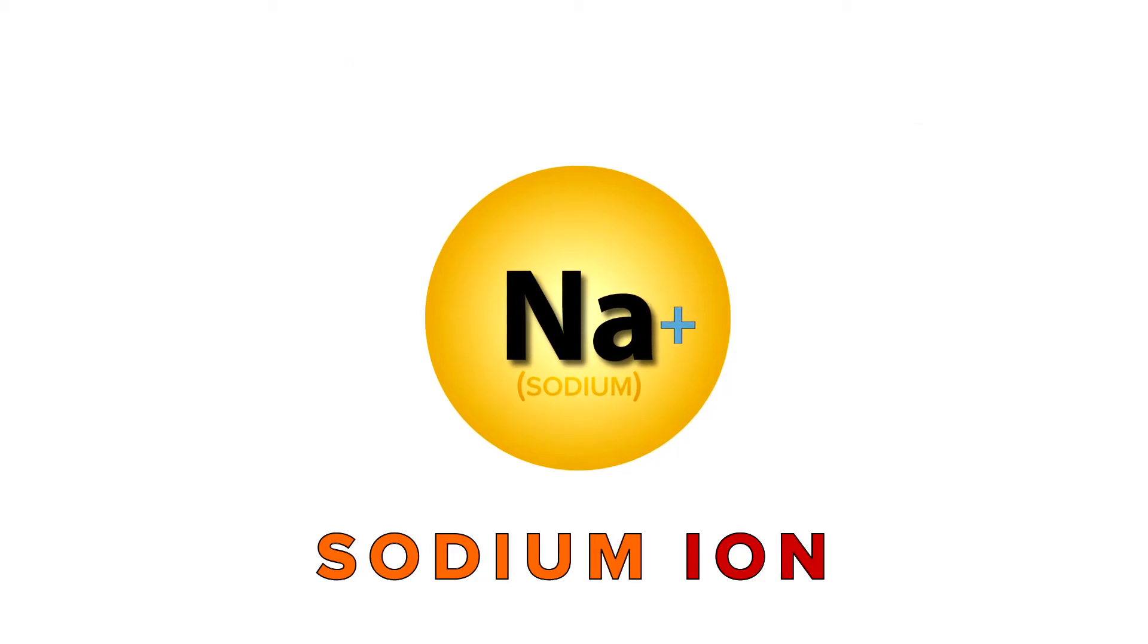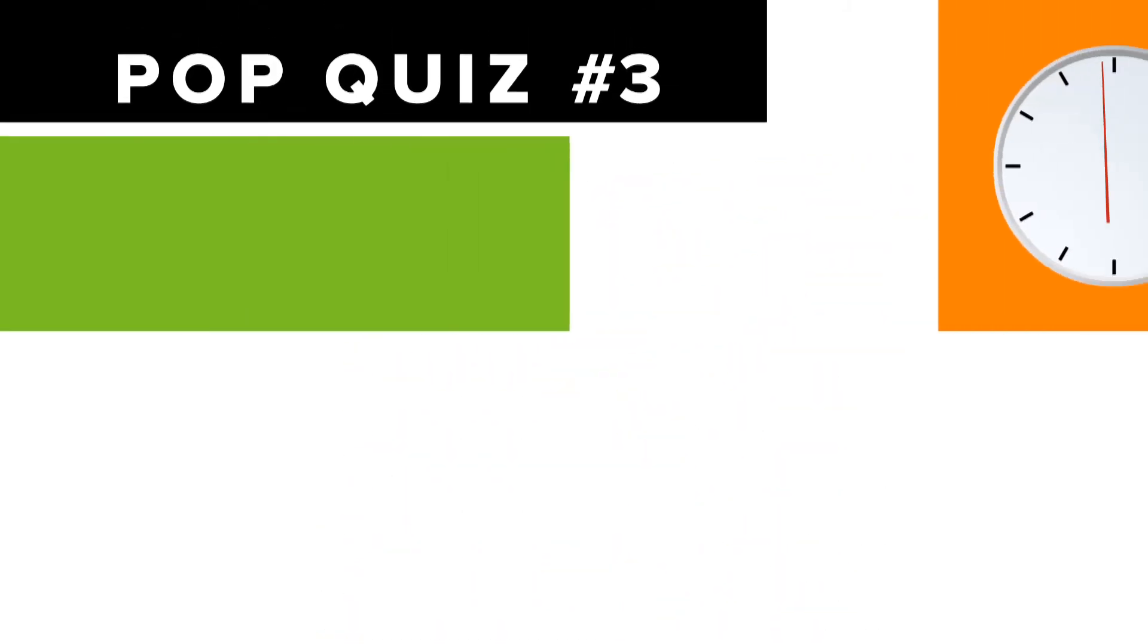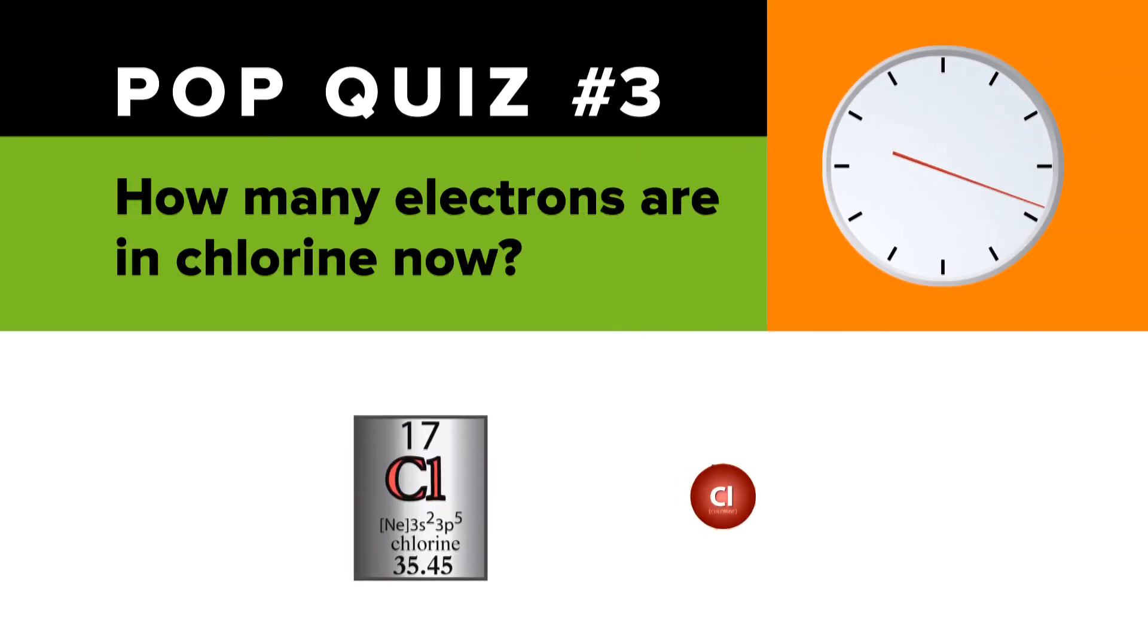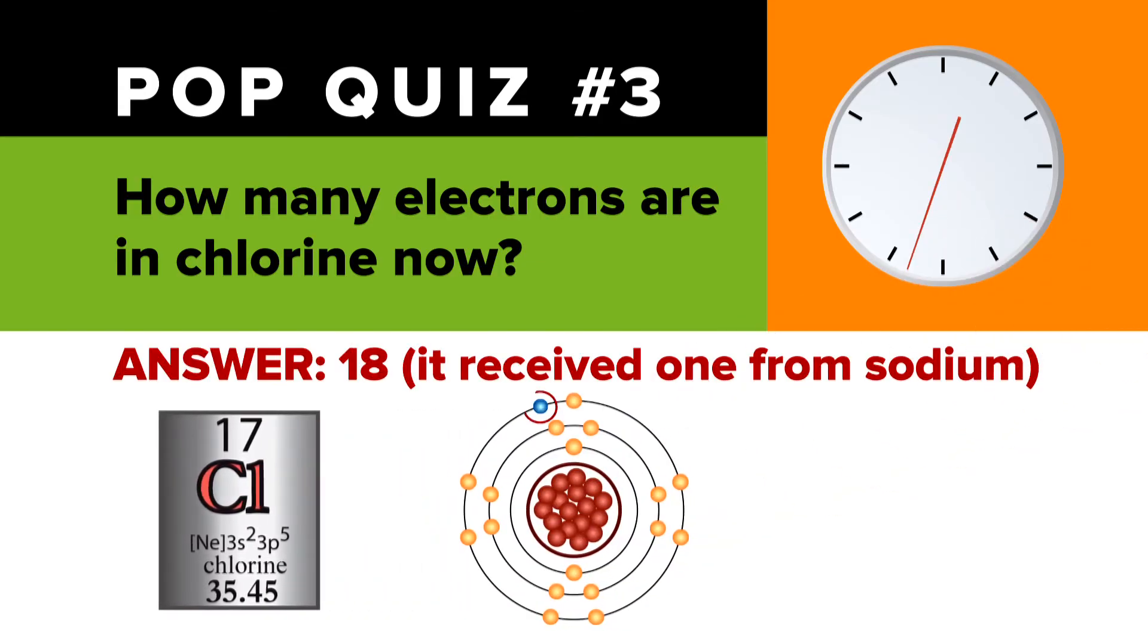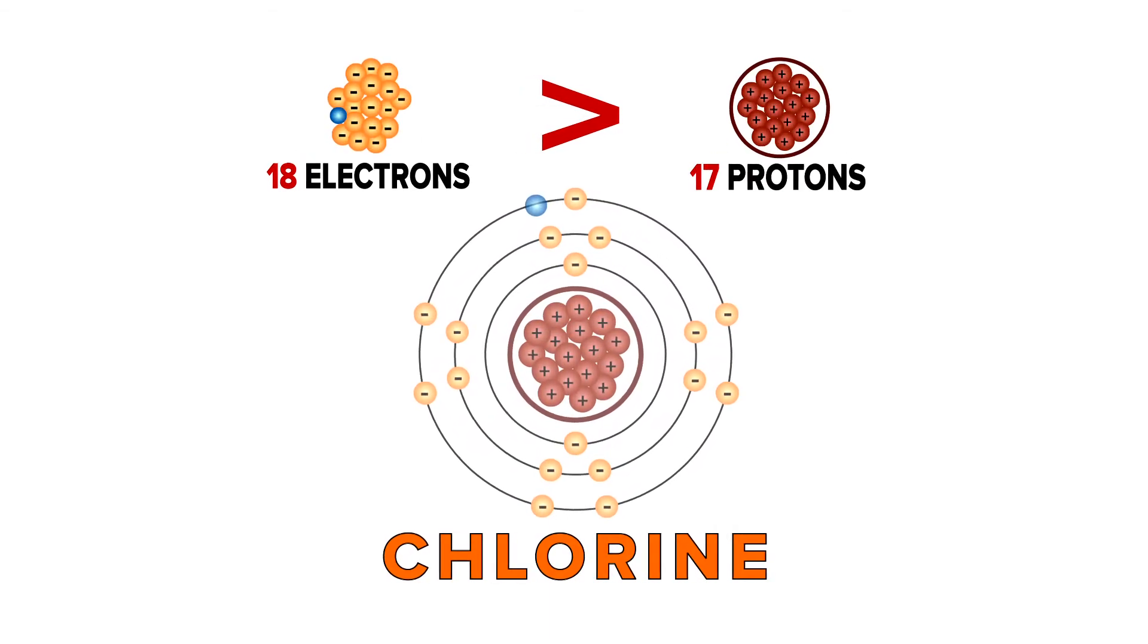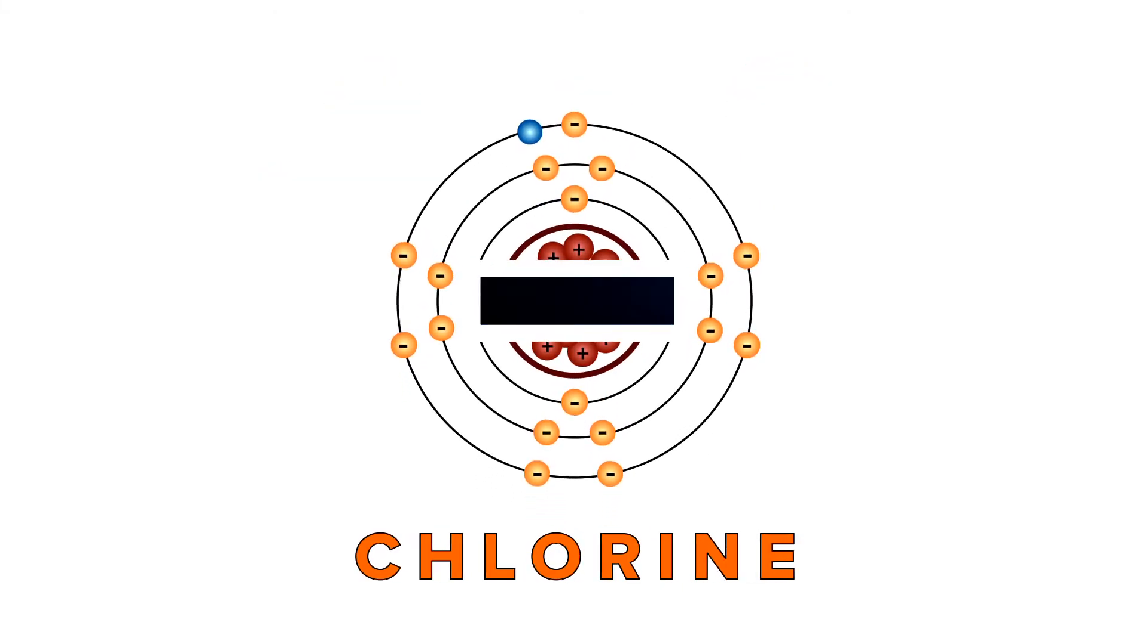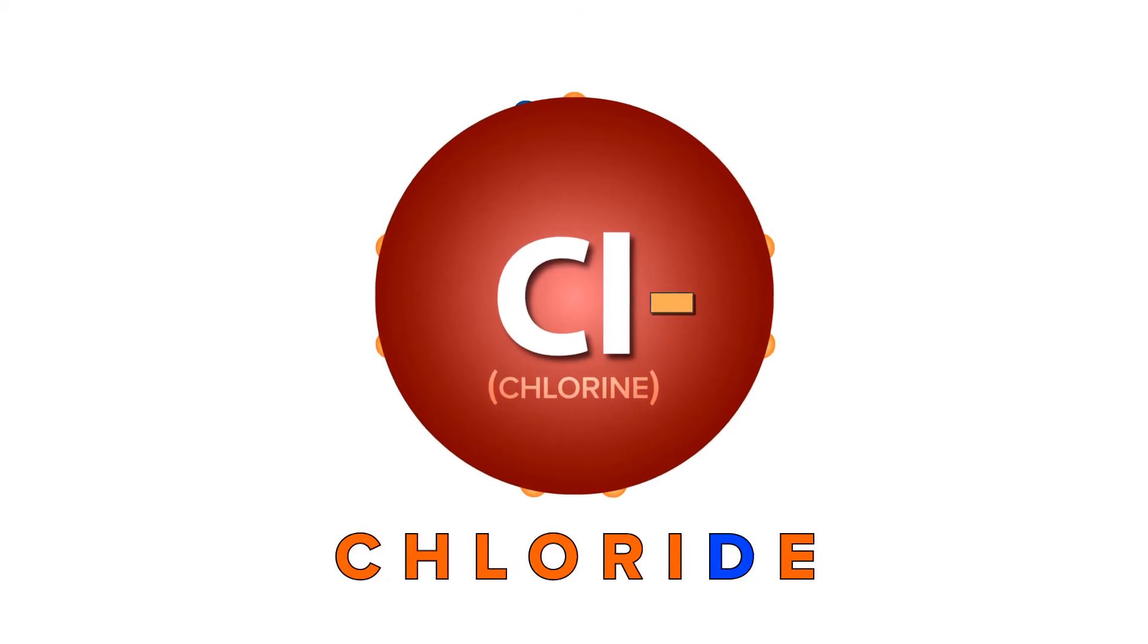That's the term for an atom with an unequal number of protons and electrons. Pop quiz number three. How many electrons are in chlorine now? Answer, 18, which means the chlorine atom is now an ion, too. 18 negative electrons outnumber 17 positive protons, which gives chlorine a negative charge, and changes its abbreviation to Cl minus, also changes chlorine to chloride.